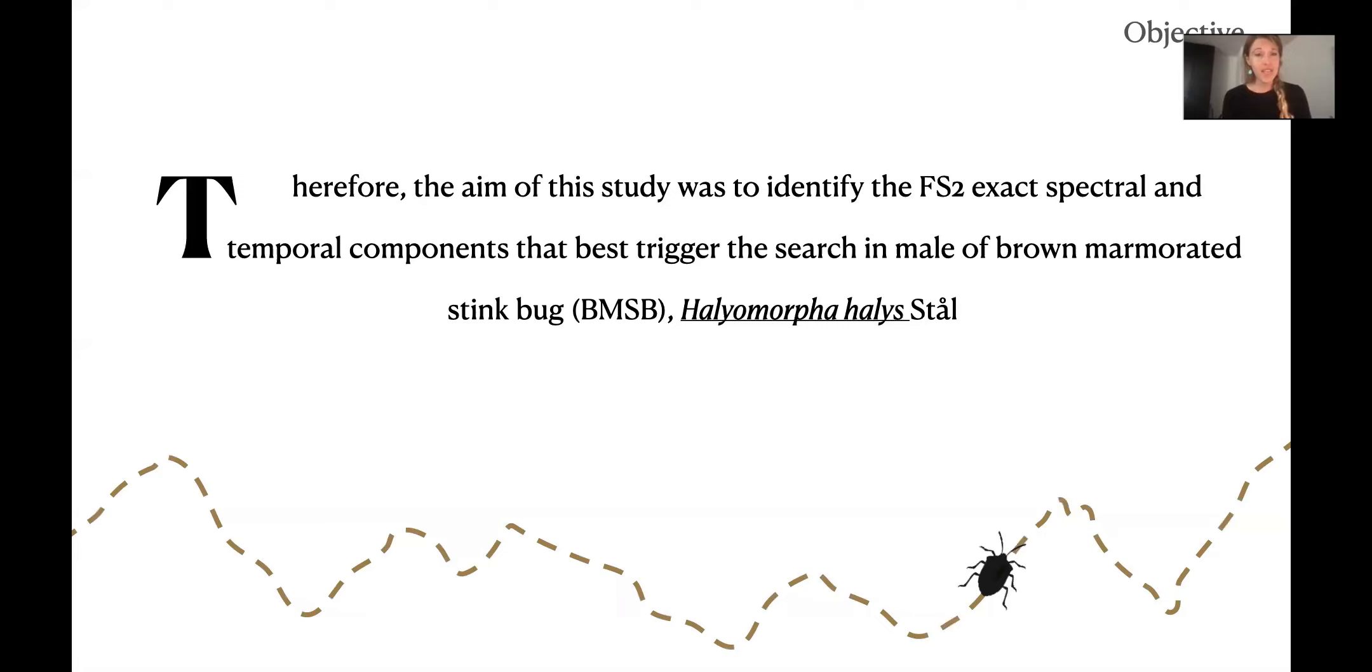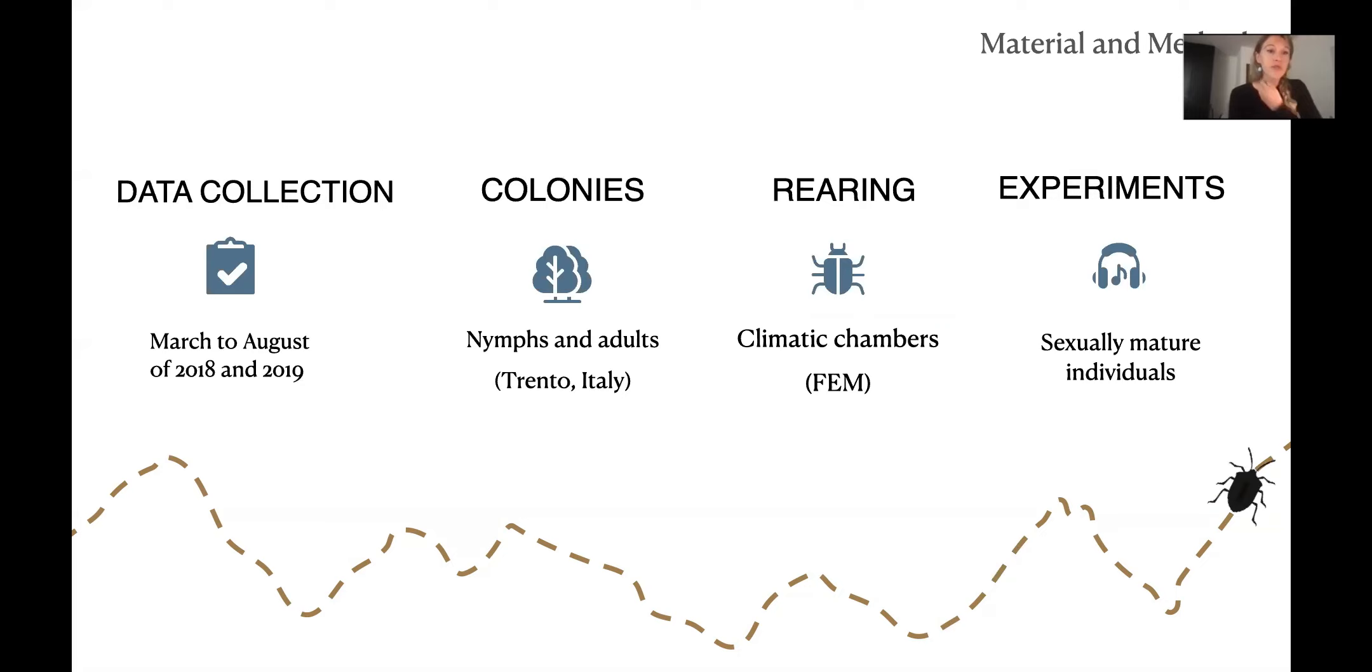Therefore, the aim of this study was to identify the FS2 signal spectrum and temporal patterns that best trigger the search in males of brown marmorated stink bugs. Our ultimate goal was to synthesize an optimal attractive FS2 signal for BMSB for field trapping.